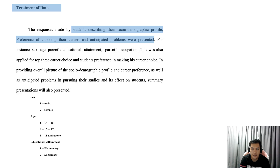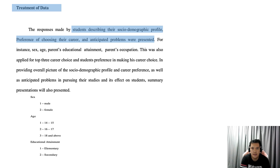Under the treatment of data, the responses made by students describing their socio-demographic profile, preference of choosing their career, and unanticipated problems were presented. For instance, sex, age, parents' educational attainment, and parents' occupation. This was also applied for the top three career choices of the student's preference in making their career choice. In providing an overall picture of the socio-demographic profile and career preference, as well as anticipated problems in pursuing their studies and its effect on students, a summary of the presentations will also be presented.